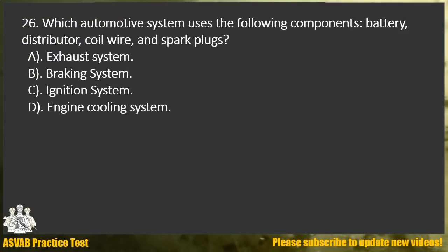Question 26. Which automotive system uses the following components: battery, distributor, coil wire, and spark plugs? A. Exhaust system. B. Braking system. C. Ignition system. D. Engine cooling system.